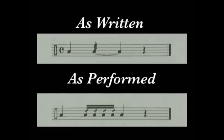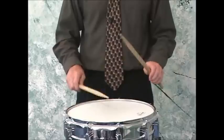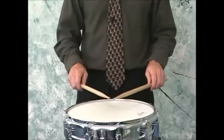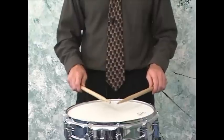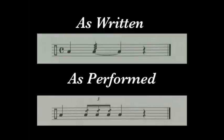Roll skeletons are the underlying subdivision used by drummers when performing rolls. The most common is the sixteenth note based roll. When a percussionist is performing a quarter note roll at a moderate to fast tempo, the underlying skeleton should be sixteenth note based. When performing a quarter note roll at a very slow tempo, the percussionist may decide to use a sextuplet based roll skeleton. When faced with an extraordinarily fast tempo, he or she may decide to use a triplet based roll skeleton.